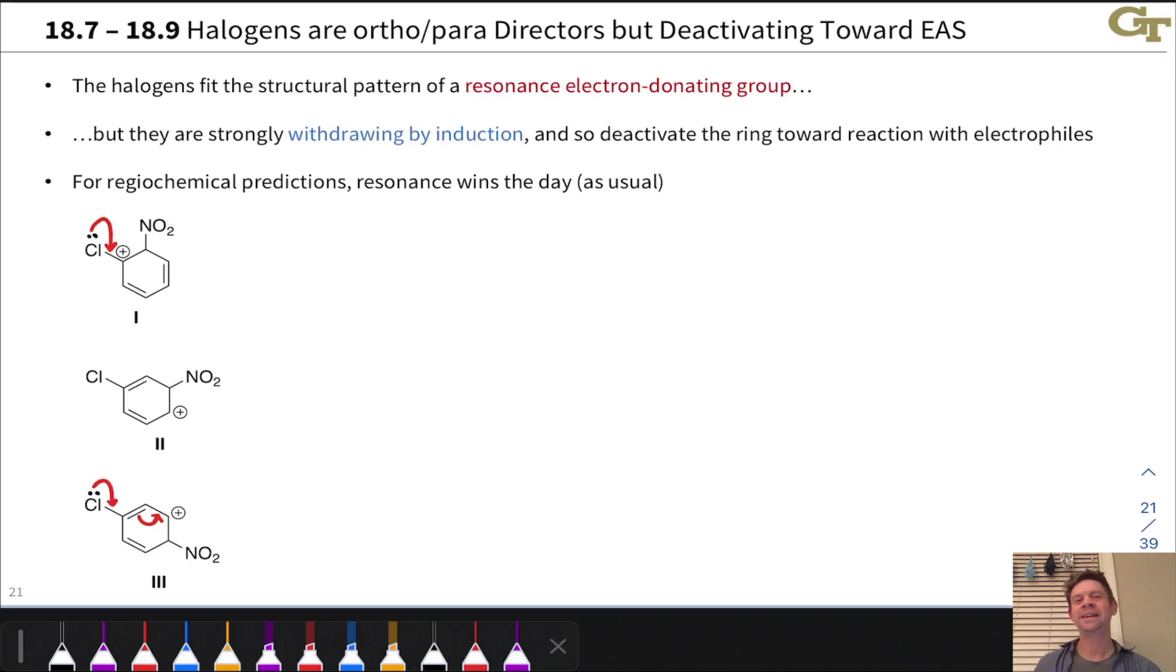The halogens present a really interesting case of electron donating and withdrawing behavior because they're donating by resonance. They fit that general structural pattern of an atom with a lone pair with only single bonds, but they're very electronegative, and so they're withdrawing by induction.